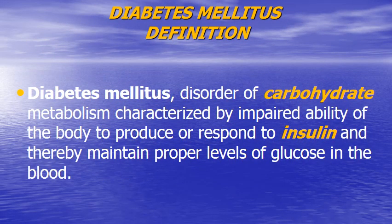Diabetes mellitus, by definition, is a disorder of carbohydrate metabolism characterized by the impaired ability of the body either to produce or respond to insulin, and thereby cannot maintain proper levels of glucose in the blood.